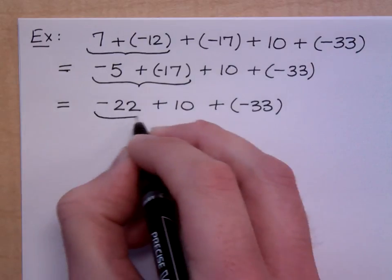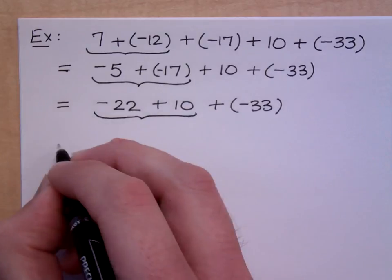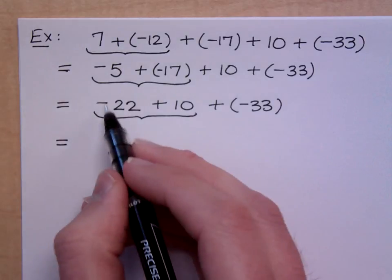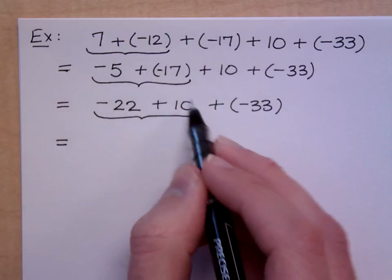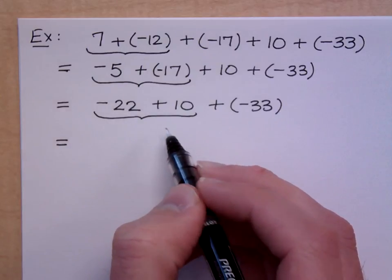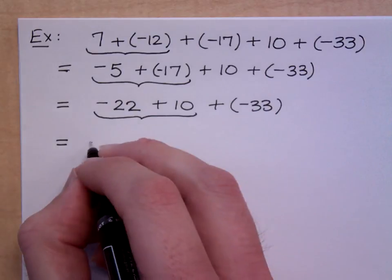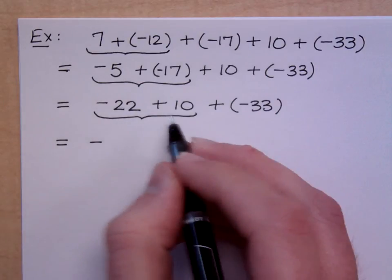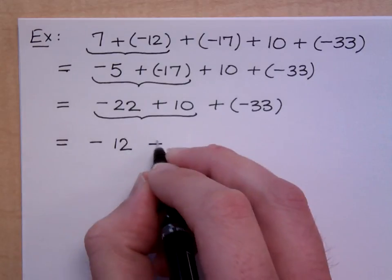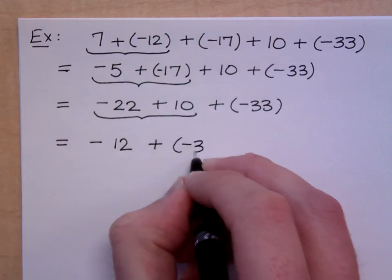Okay, what about these next two pieces? A negative 22 plus 10? Negative 12. Negative 12? Yeah. You have a negative 22 here and a positive 10. Who has the larger absolute value? The negative number does. So you keep this a negative and the difference between 22 and 10 is 12.